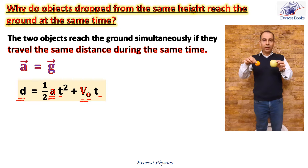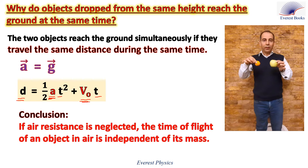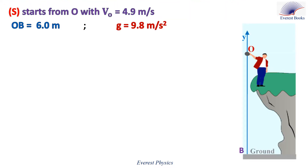We conclude that if air resistance is neglected, the time of flight of an object in air is independent of its mass. Now let's solve an exercise about a freely falling object. Tom uses a pocket shot to shoot a stone vertically upward. The stone is shot at time zero from 0.06 meters above ground with an initial velocity of magnitude 4.9 meters per second. Extend the positive y-axis upward and take the launching point O as its origin.